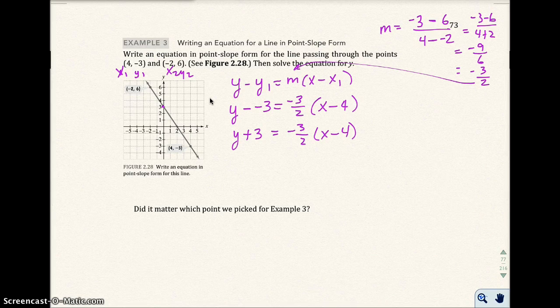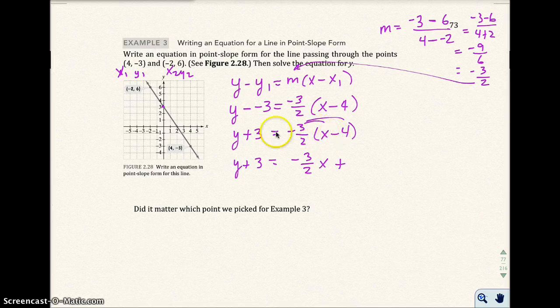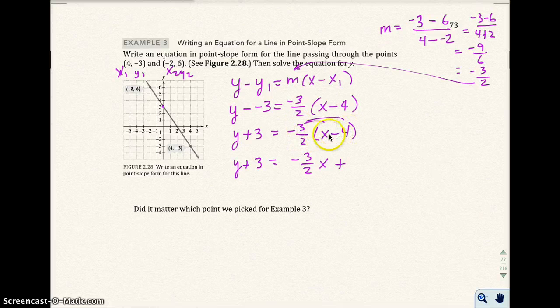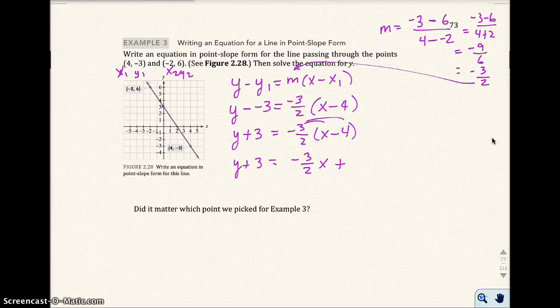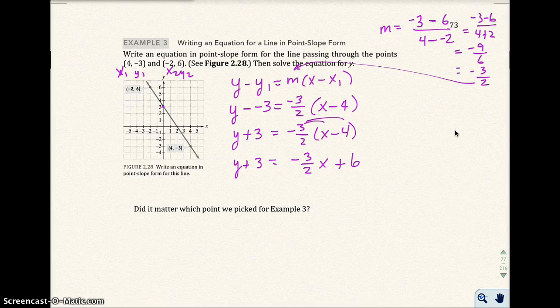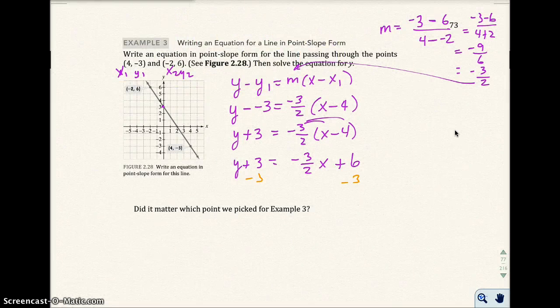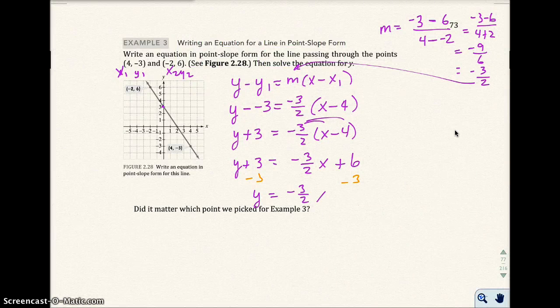The same thing as y plus 3 equals -3 over 2, x minus 4. That's the point-slope form where they want me to solve for y. So I'm going to go ahead and distribute this. So I get y plus 3 equals -3 over 2 x. This gives me plus because the negative times the negative is positive. And I get plus 6. Then I'm going to subtract 3 from both sides. So I get y equals -3 over 2 x plus 3 if my equation's solved for y.